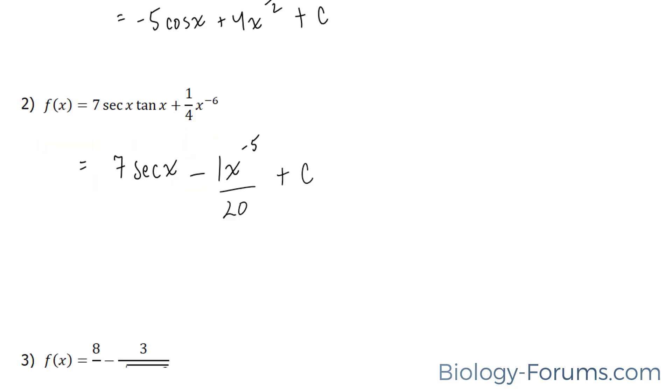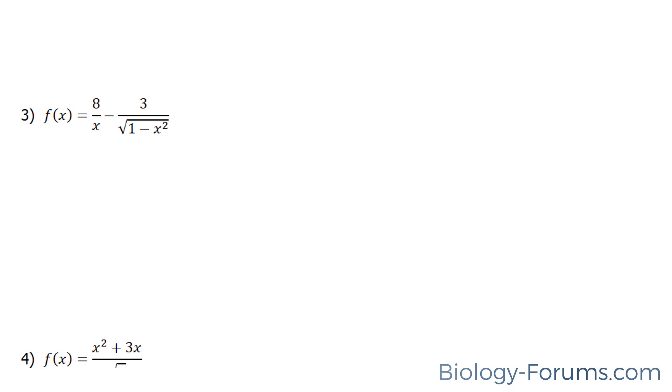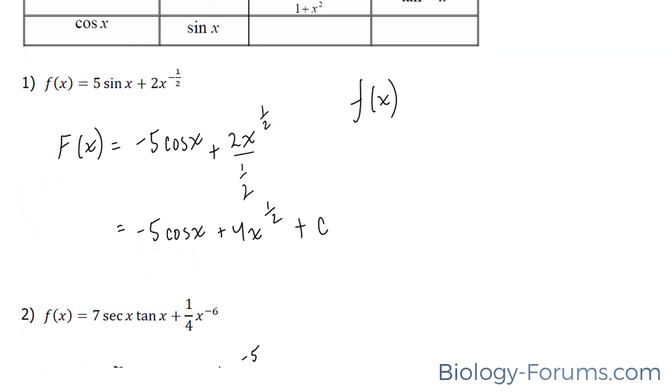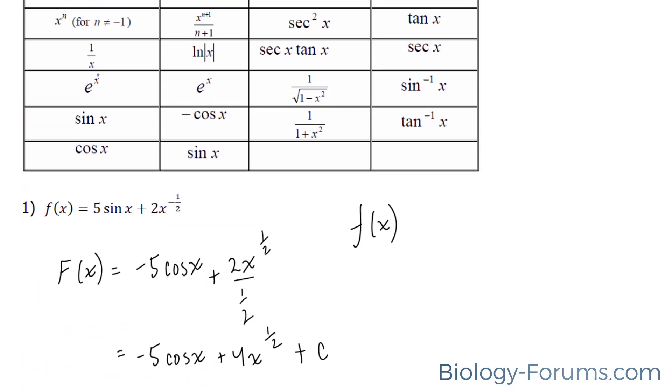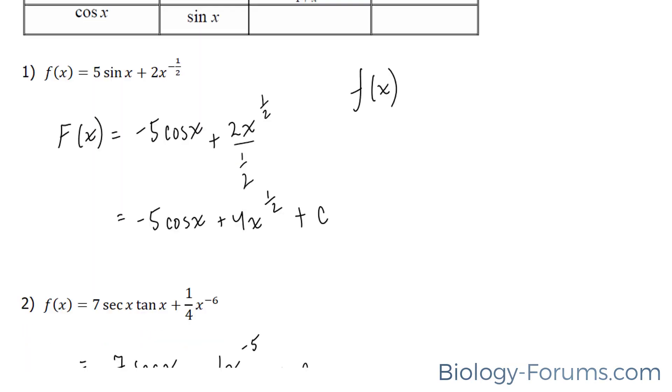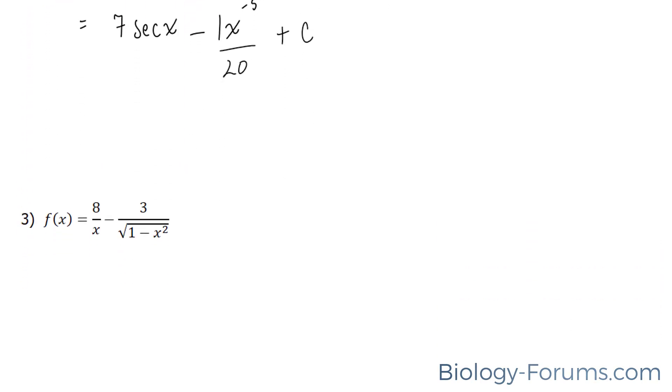Let's move on to question number 3. In this question, we have 8 over x minus this term. Keep in mind in our list that when you have 1 over x, use the natural log of the absolute value of x. So we'll do the same thing. This becomes 8 ln absolute value of x.